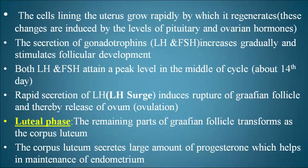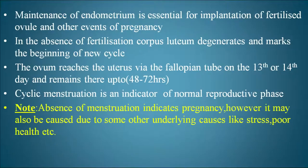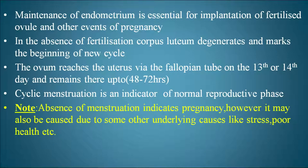The last phase is the luteal phase. The remaining parts of the Graafian follicle transform into the corpus luteum. The corpus luteum secretes large amounts of progesterone, which helps in maintenance of the endometrium. Maintenance of the endometrium is essential for implantation of the fertilized ovum and other events of pregnancy. In the absence of fertilization, the corpus luteum degenerates and marks the beginning of a new cycle.